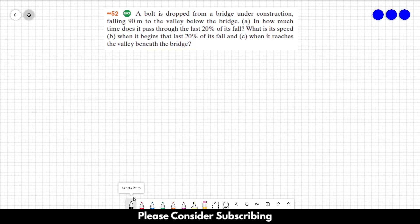Number 52. A boat is dropped from a bridge under construction, falling 90 meters to the valley below the bridge. Letter A: In how much time does it pass through the last 20% of its fall?